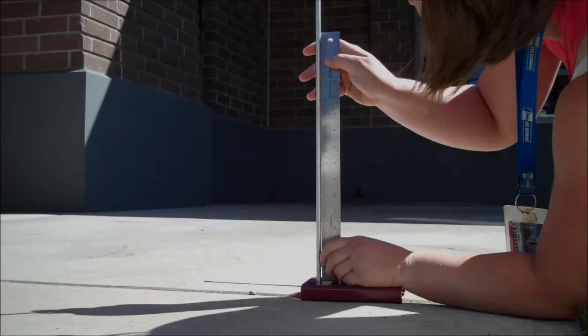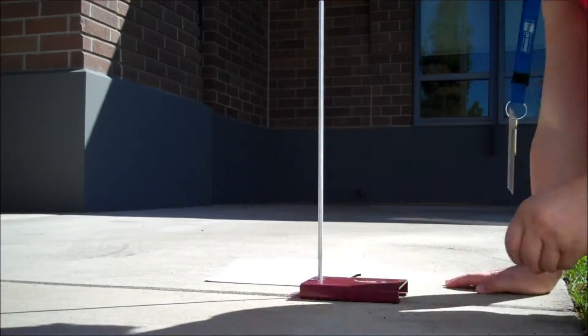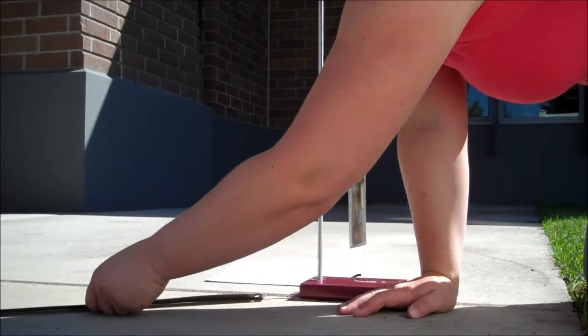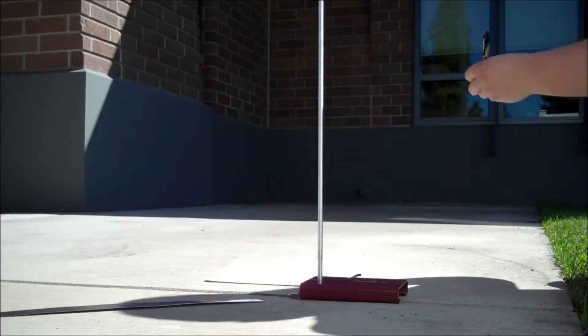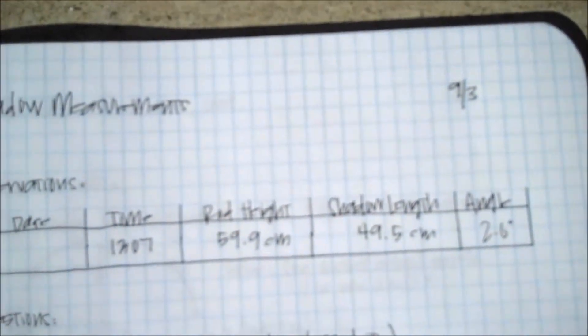In class, we went outside. We took a ring stand, a meter stick, and a protractor. We measured the height of the ring stand. We measured the length of the shadow, and we also measured the angle of that shadow and recorded all this data into our laboratory notebook, which we took back to class.